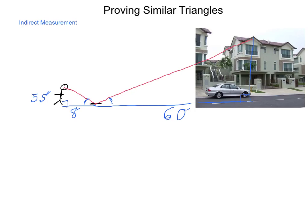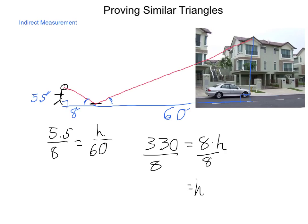So what we do now is we take our information and we place it into a proportion. Five and a half feet compared to eight feet has to be equal to the height of the house divided by sixty feet. And then working some cross products, the product of the means and the product of the extremes, we come out with our extremes product being three hundred thirty, five and a half times sixty, and this is going to equal eight times h the product of the means. Using our division property of equality, I come out with the height of the building or the height of the house up to that gazebo as forty one and a quarter feet.